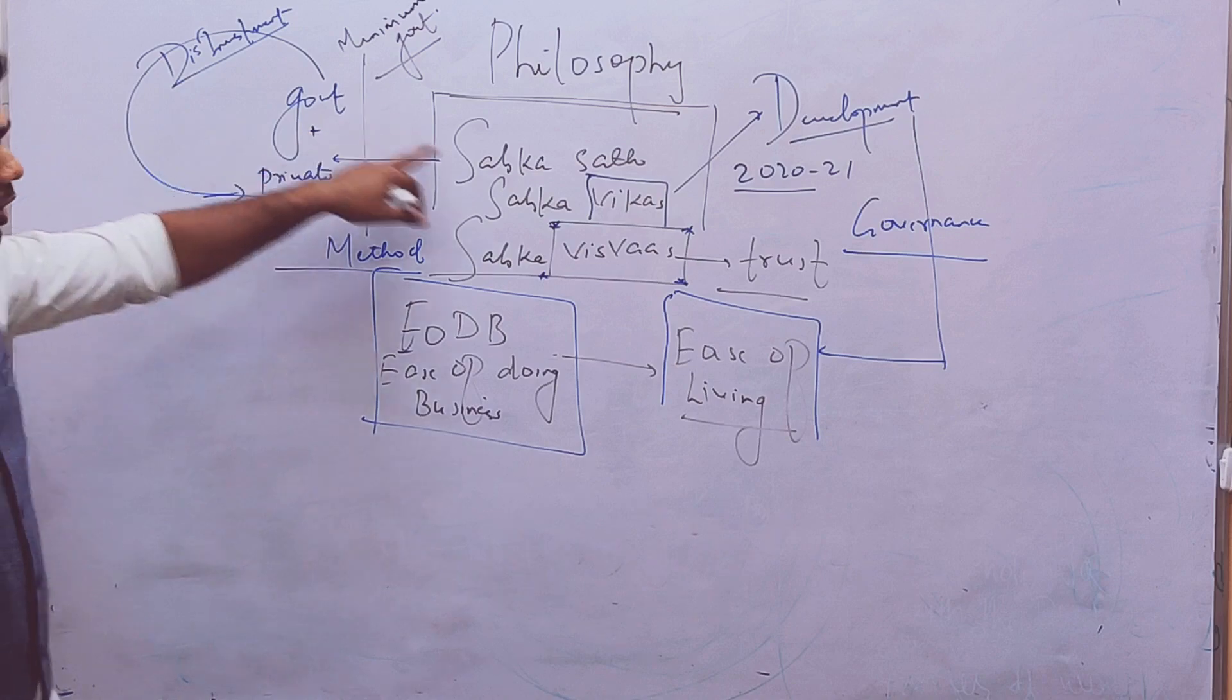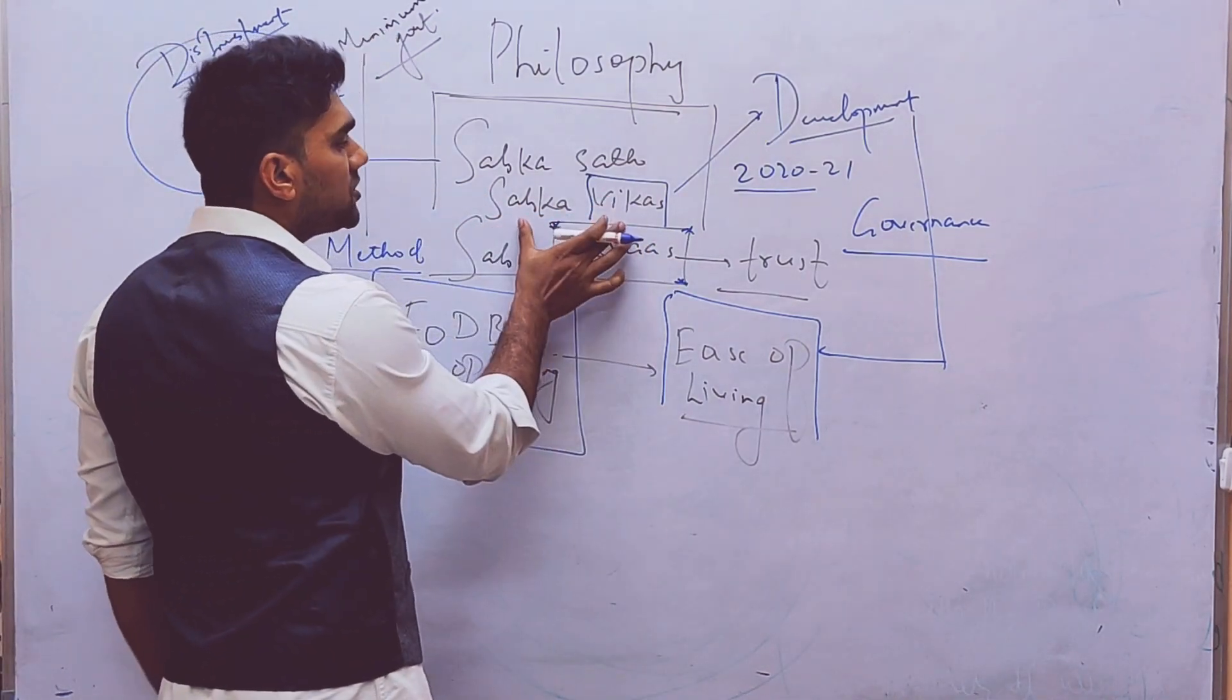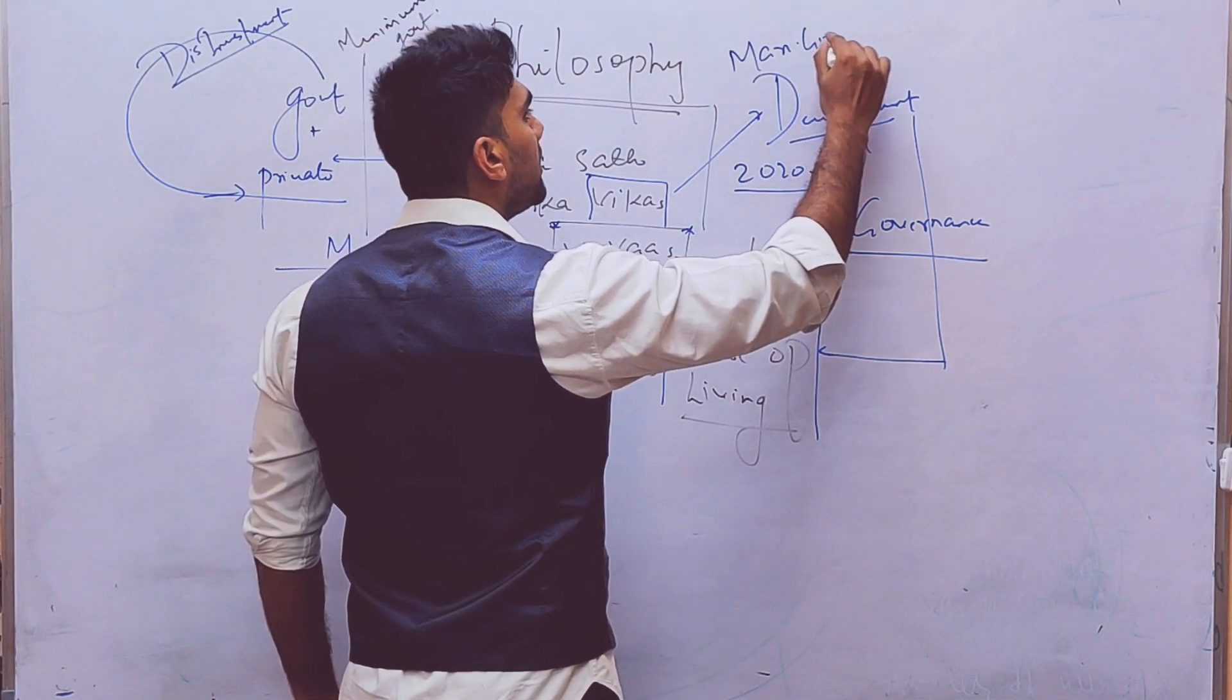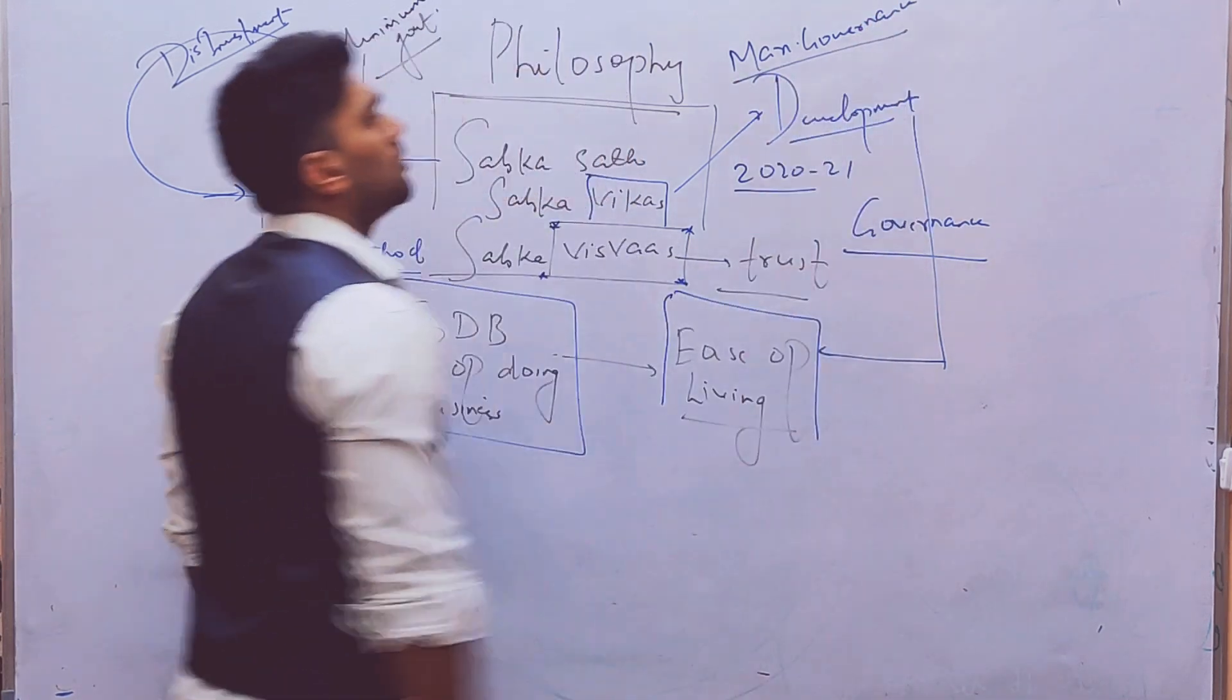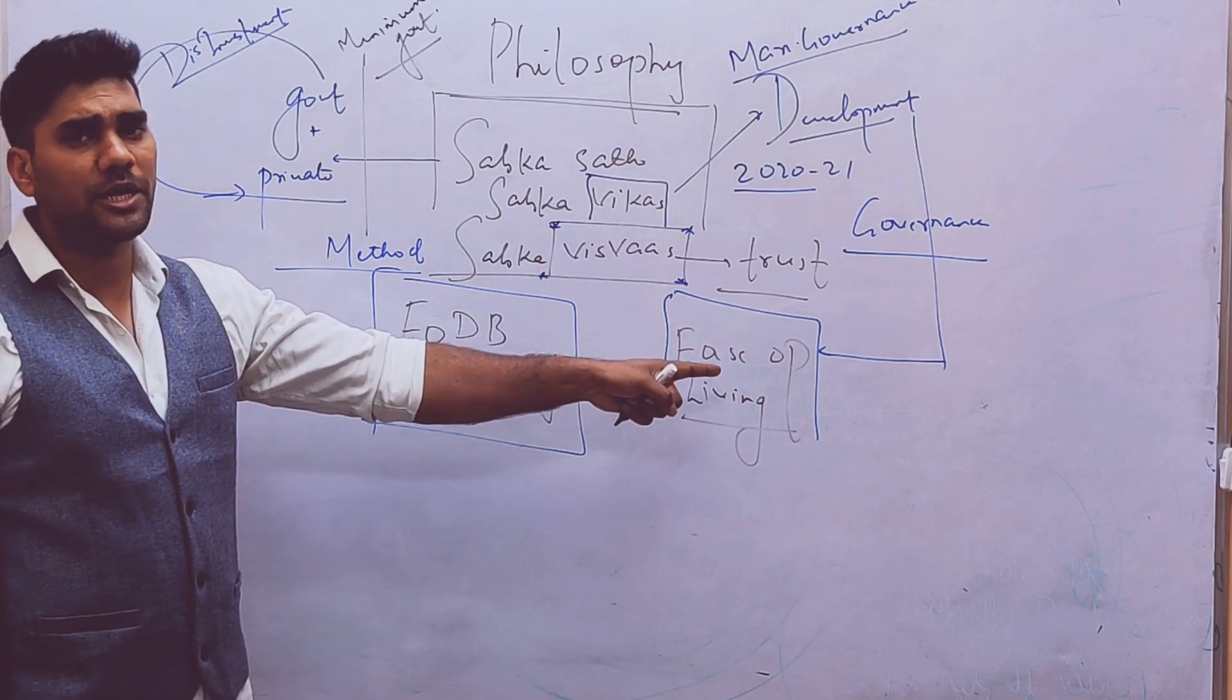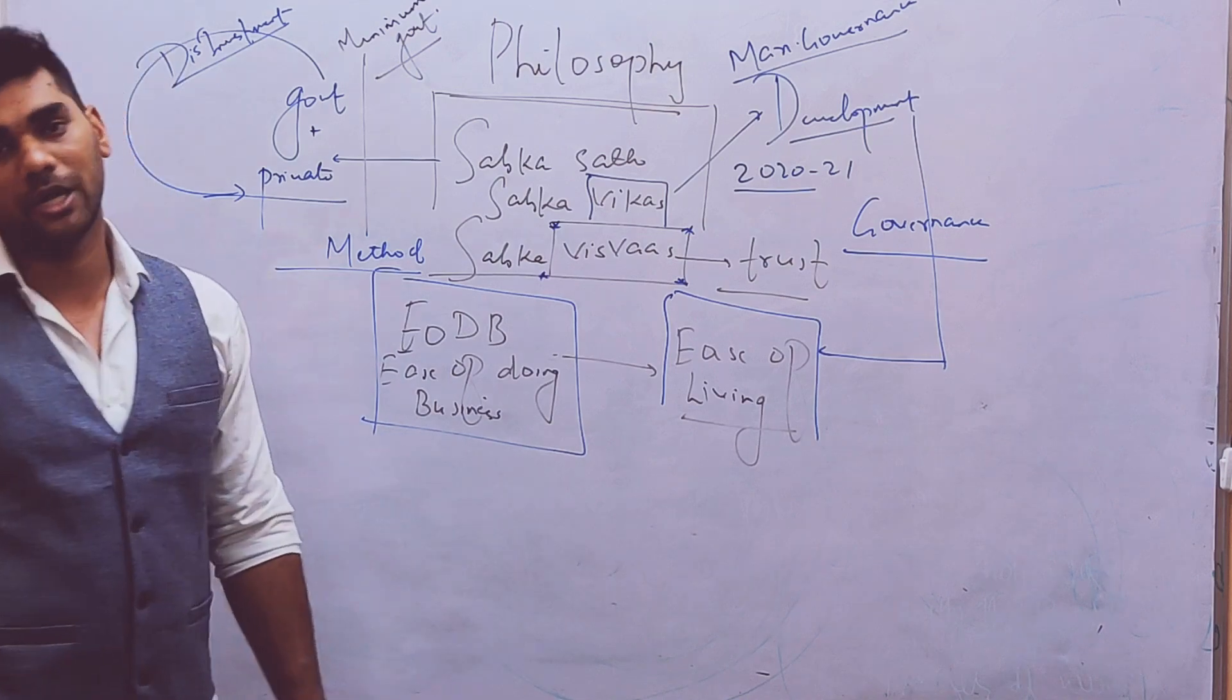We can call it as minimum government. Through minimum government we will do development. Minimum government at this time can mean maximum governance. Now we are discussing philosophy. We haven't gone into terms yet. Try to understand for now how we are going to use this concept in answer writing.